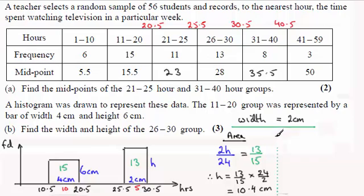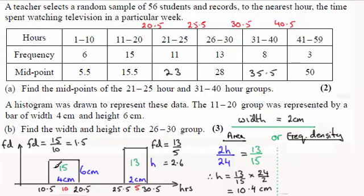I'll just write an alternative method. The alternative method would be to consider the frequency densities for this particular question. It's slightly longer so that's why I wouldn't necessarily go for it, but it will work. The frequency densities, remember frequency density is equal to the frequency divided by class width. The frequency was 15 and the class width was 10 units, so 15 divided by 10 is 1.5. For this rectangle the frequency density is going to be the frequency which is 13 divided by the class width which is 5 units, and that comes to 2.6.